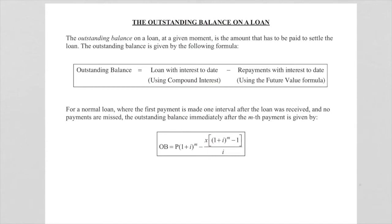The outstanding balance on a loan at any given point is the amount that has to be paid to settle the loan. The outstanding balance is given by the following formula. You don't need to memorize the formula, just remember how we're going to find it.